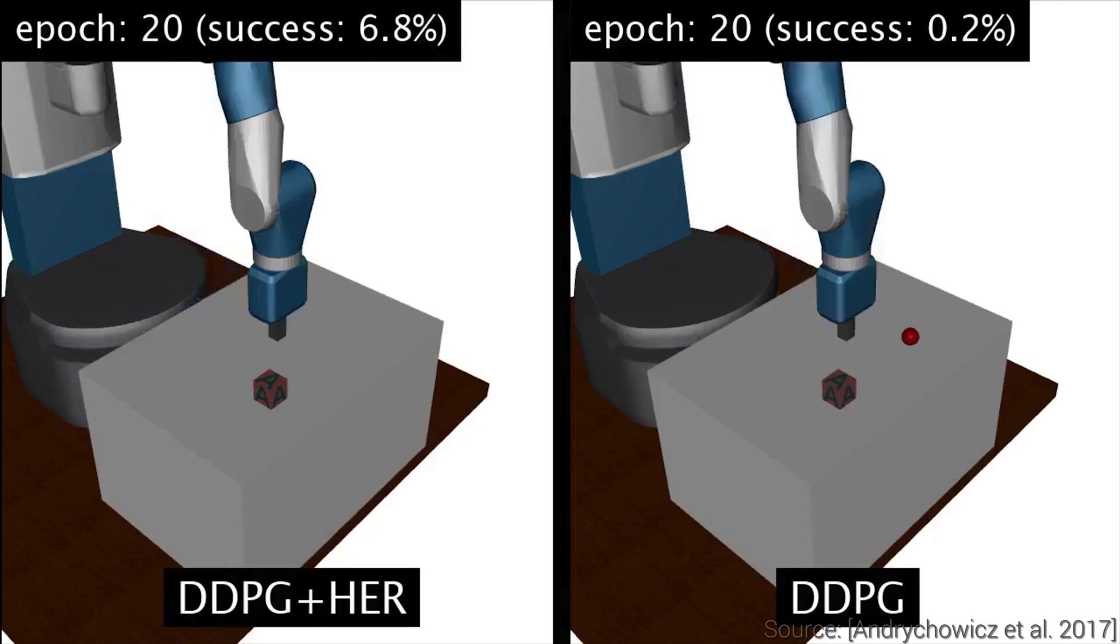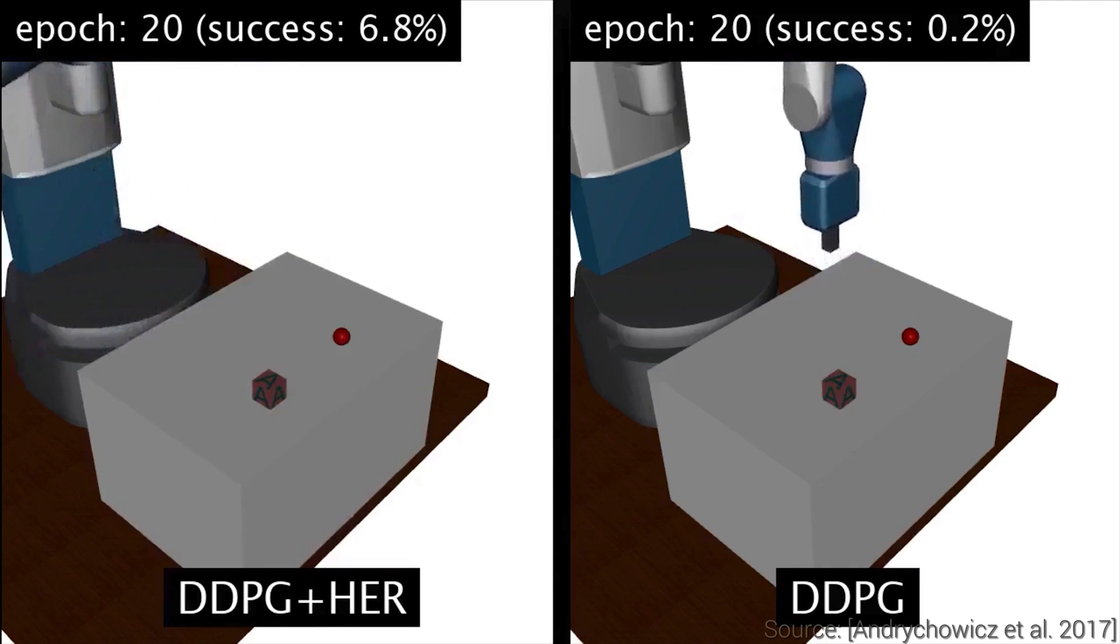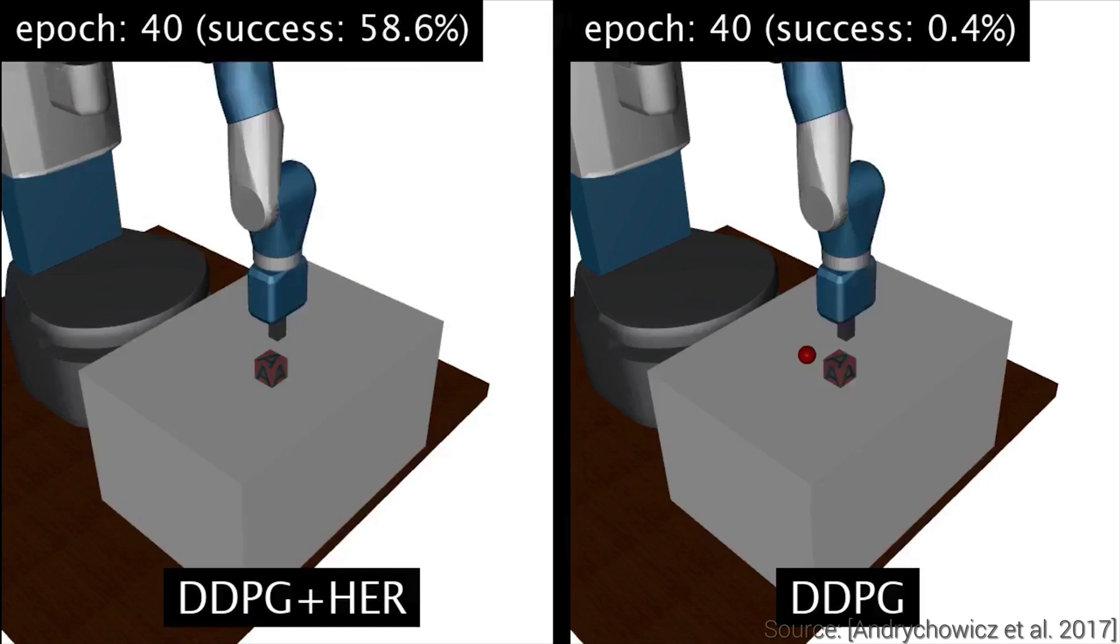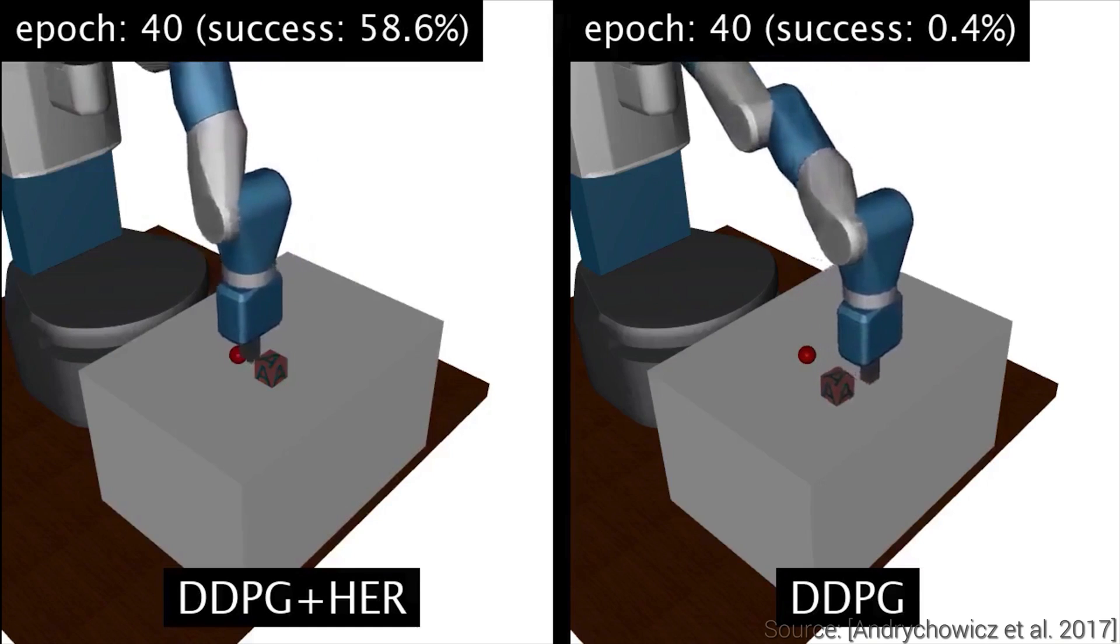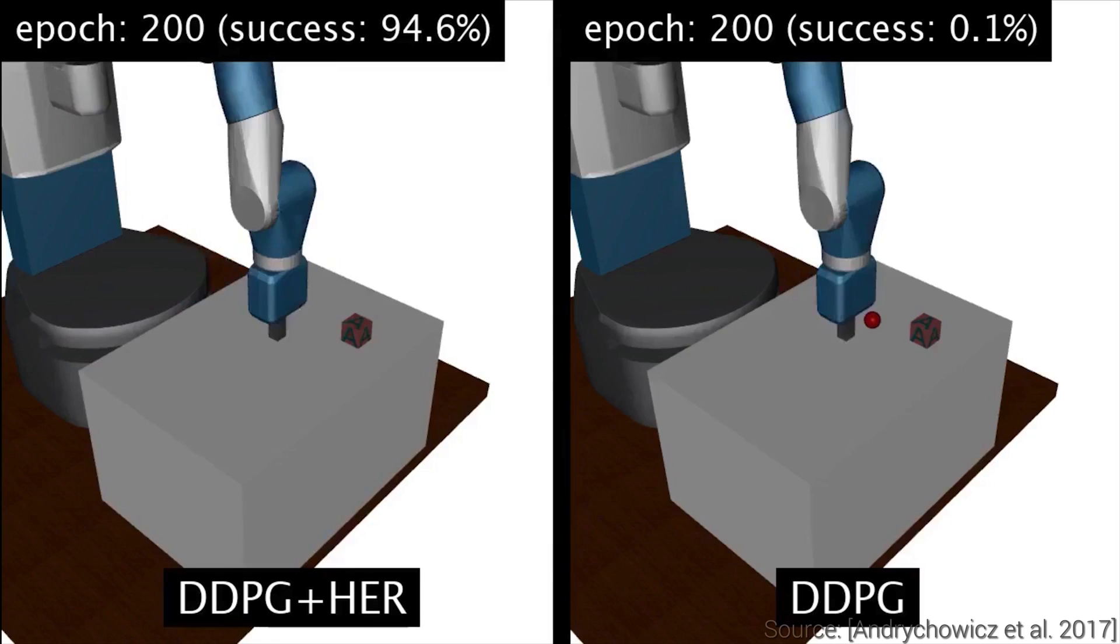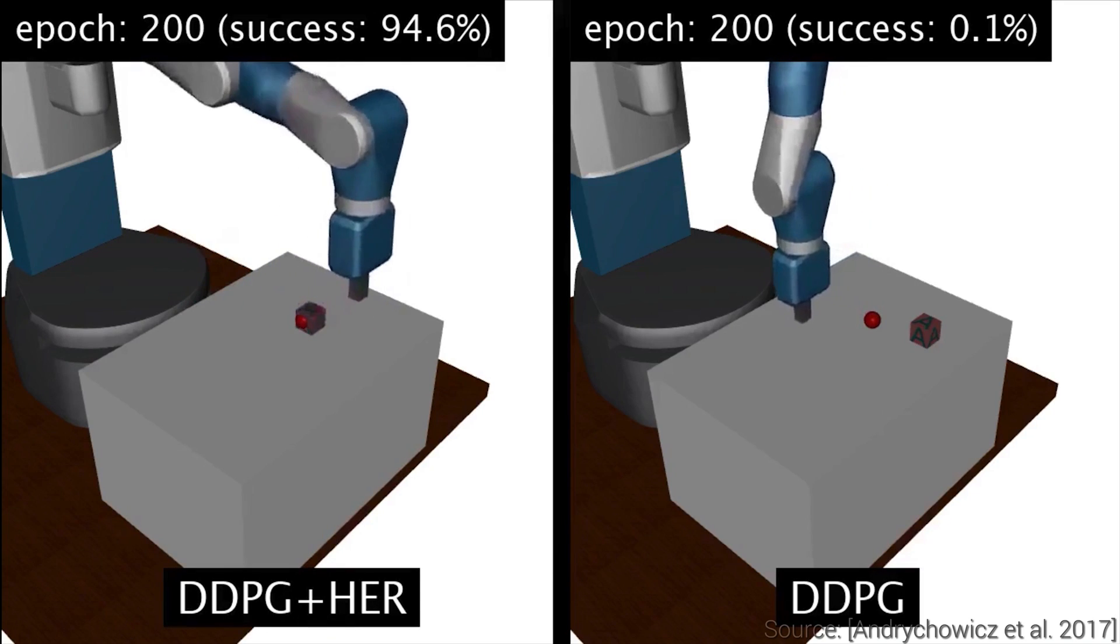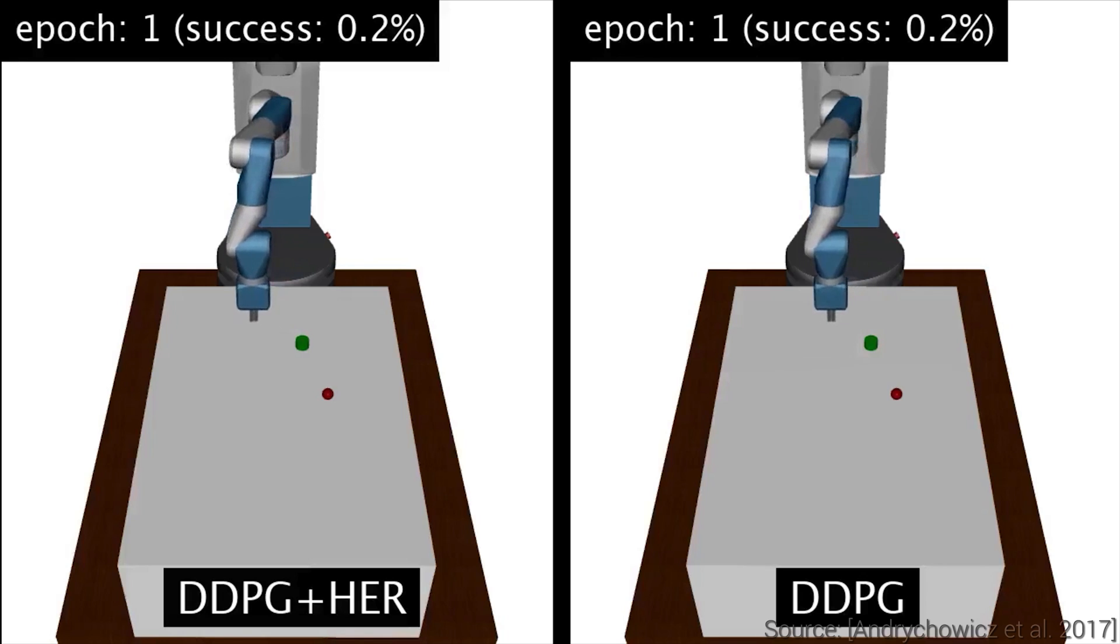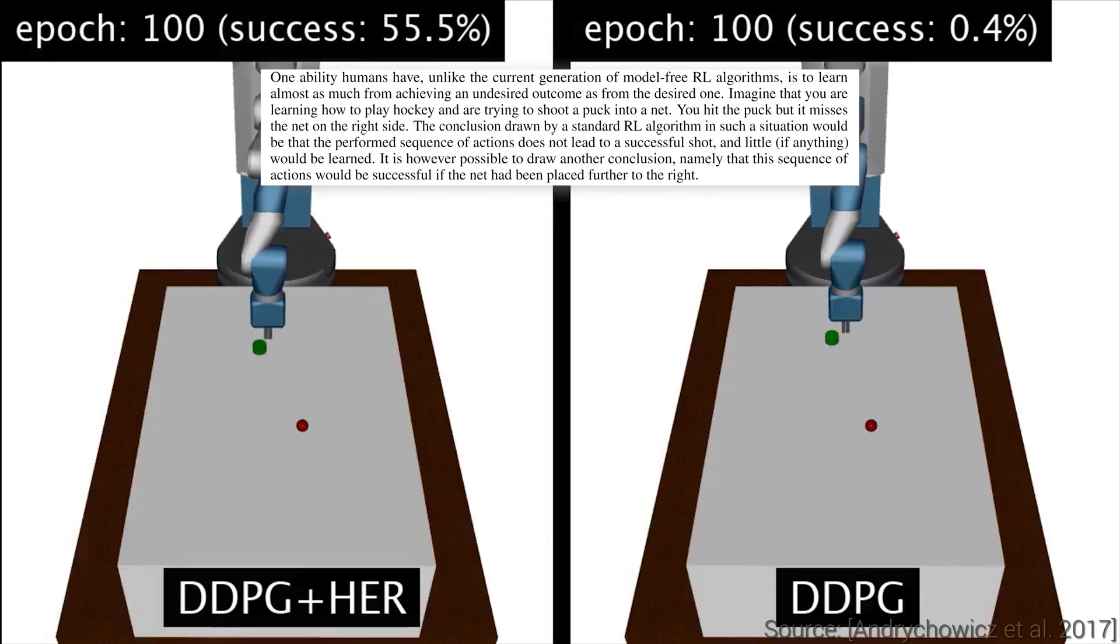In the video, you can see a comparison with a previous algorithm with and without the HER extension. The higher the number of epochs you see above, the longer the algorithm was able to train. The incredible thing here is that it is able to achieve a goal even if it had never been able to reach it during training. The key idea is that we can learn just as much from undesirable outcomes as from desirable ones.